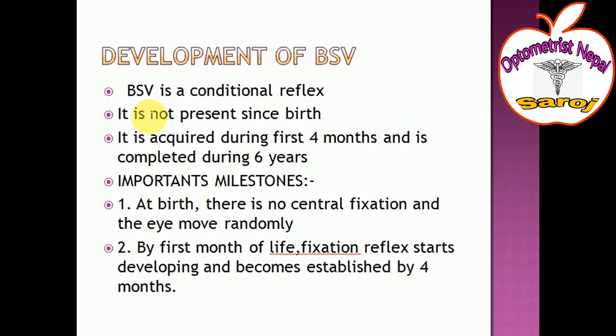Regarding the development of binocular single vision: binocular vision is a conditioned reflex — it is not present since birth. When a child is born there is no binocular single vision, but it is acquired during the first four months and is completed fully during six years. Important milestones of binocular single vision development follow.